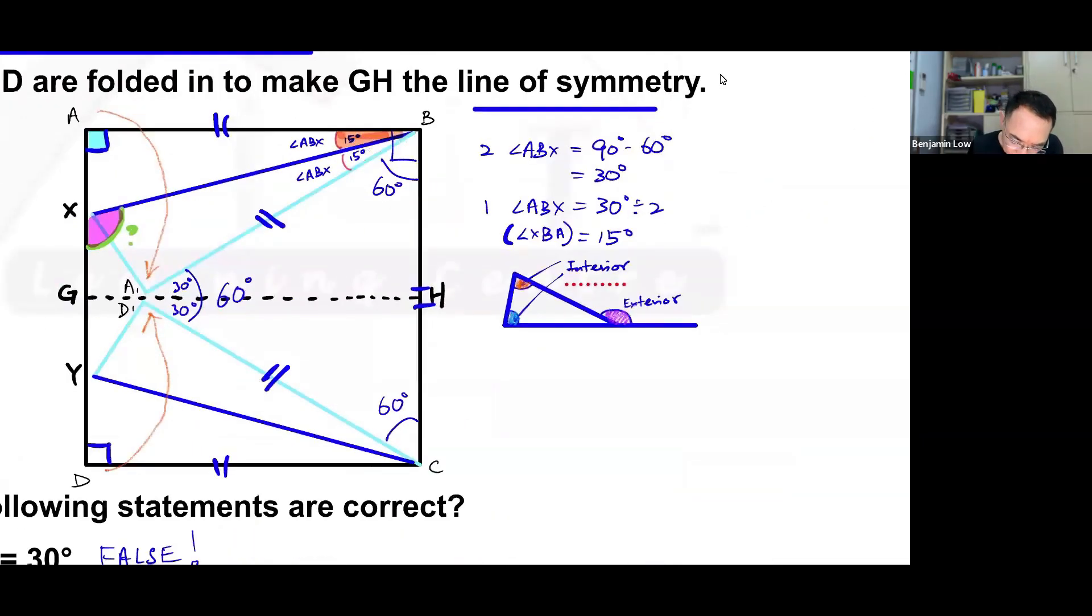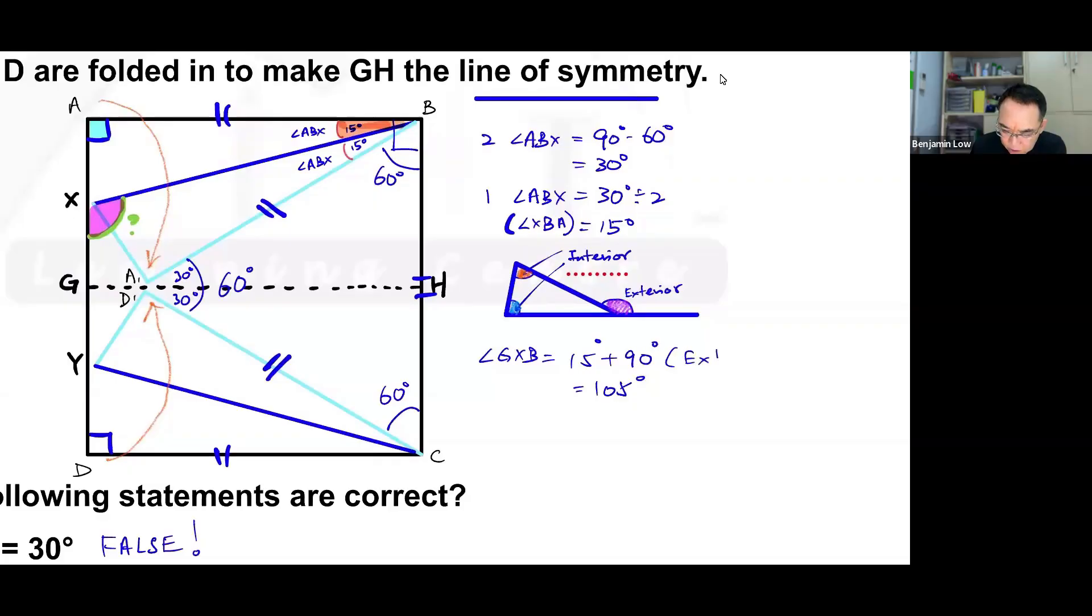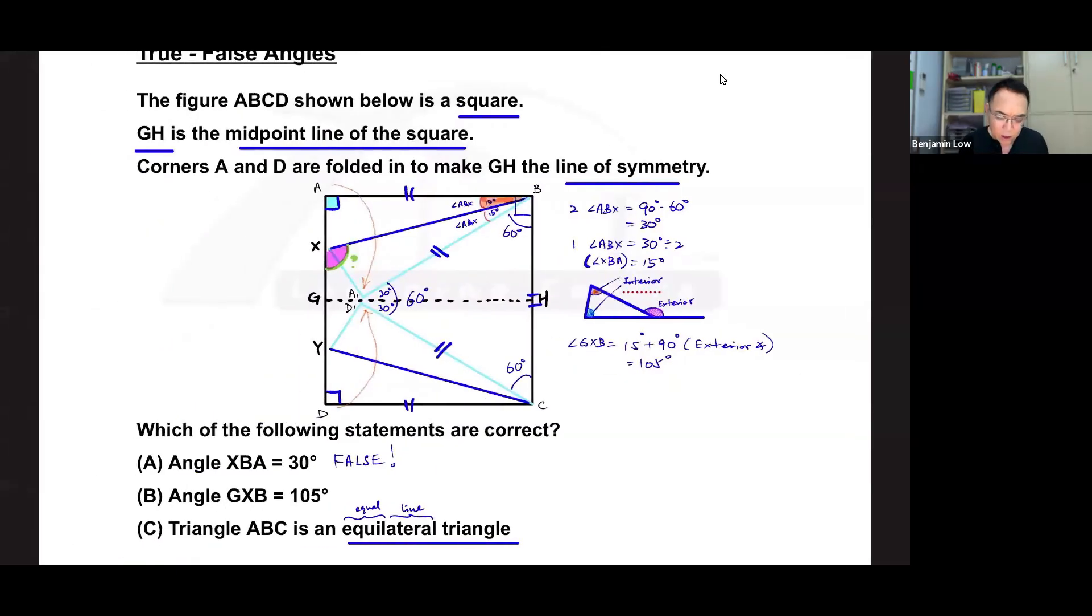Okay, simple. You're supposed to take 15 plus 90 to get the purple angle. Alright. So 15 plus 90 gives me 105 degrees. This angle is angle GXB. Okay, the purple angle. So angle GXB is 105. And if you really want to know the name of this rule, it is called exterior angle. Okay, short form for angle. And so we conclude by saying that angle GXB is true.